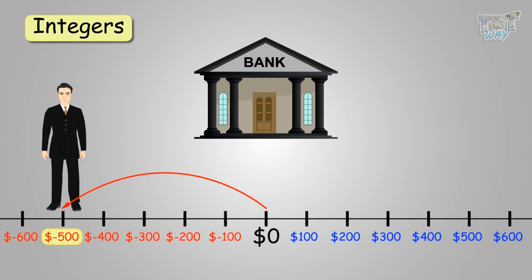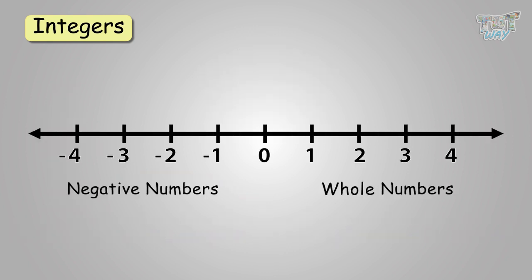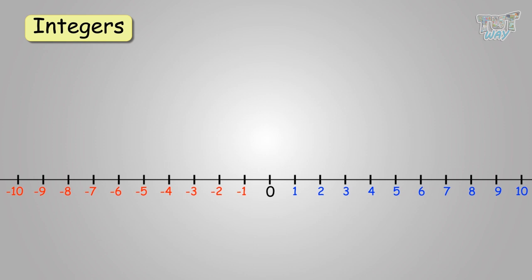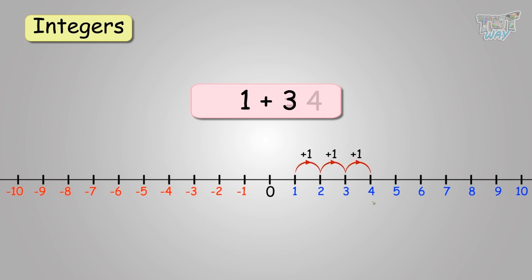So, now we know what integers are, and we also know the concept of negative numbers. Now, we will be learning how to add and subtract integers on the number line. We have to add 1 and 3. You can start at 1 and hop 3 times. You get 4. So, 1 plus 3 is 4.